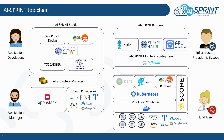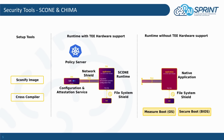Let's have a quick look at the individual components of the SCONE security toolchain. It can be broken down into the following components. We have setup tools which actually help us to transform native applications into confidential applications. For setup tools, we have two tools: the cross compiler, which helps us to compile an application in such a way that it will later use the TE hardware support, available on the nodes by adding some extra instrumentation; as well as the SCONEify image tool, which transforms a native Docker image into a confidential one.